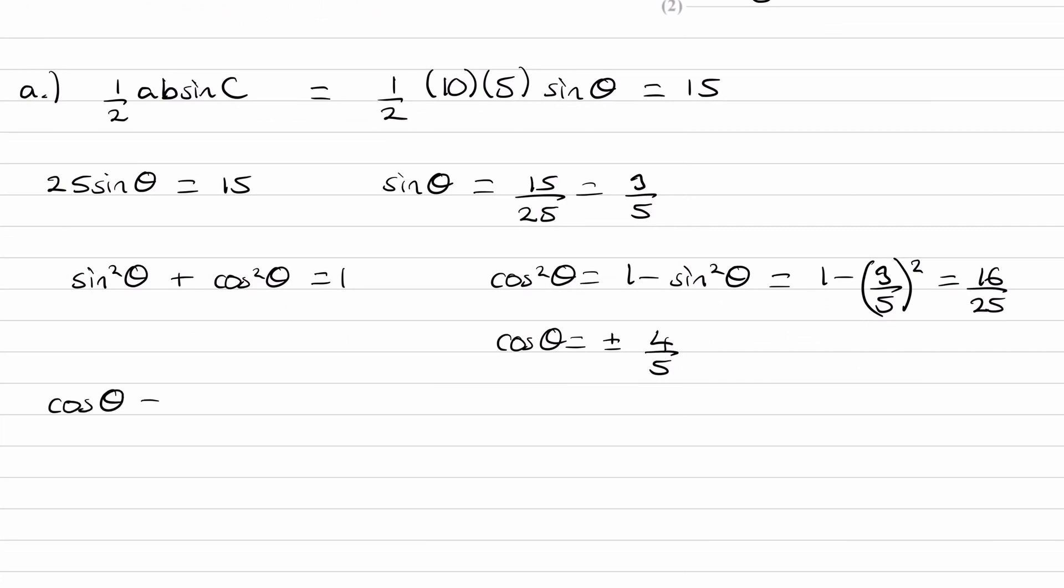If cos theta is four over five, then theta equals 36.9 degrees. If cos theta equals minus four over five, inverse cos gives us theta being 143.1 degrees. So those are the two possibilities for theta.